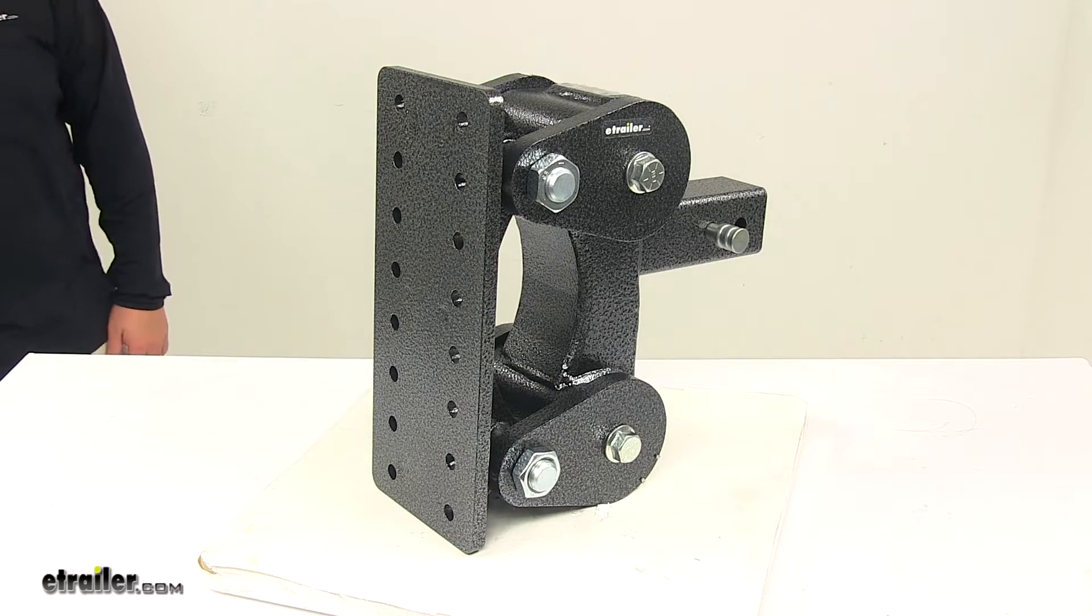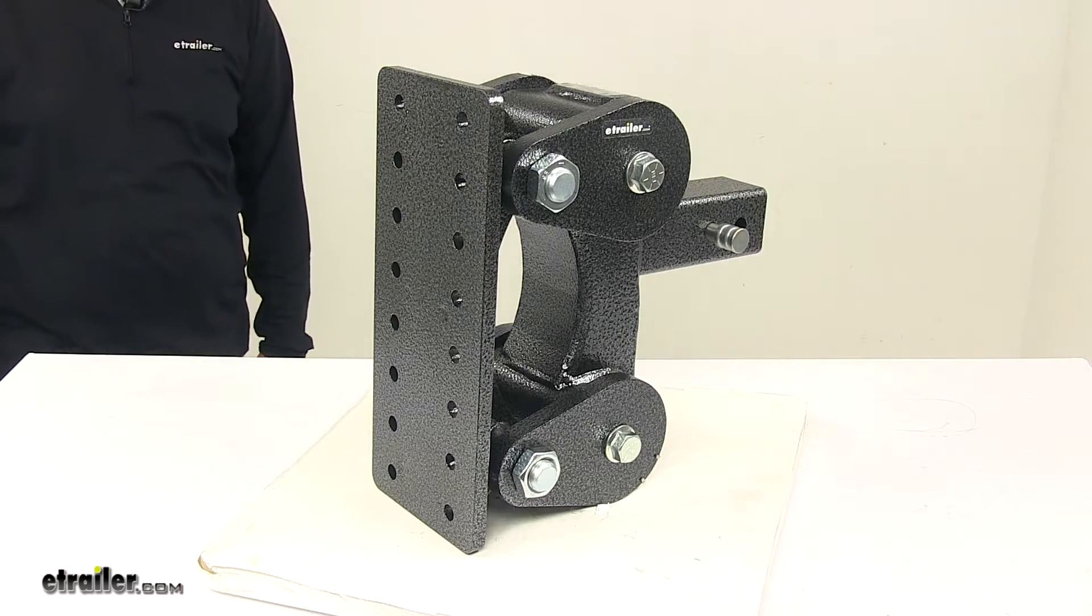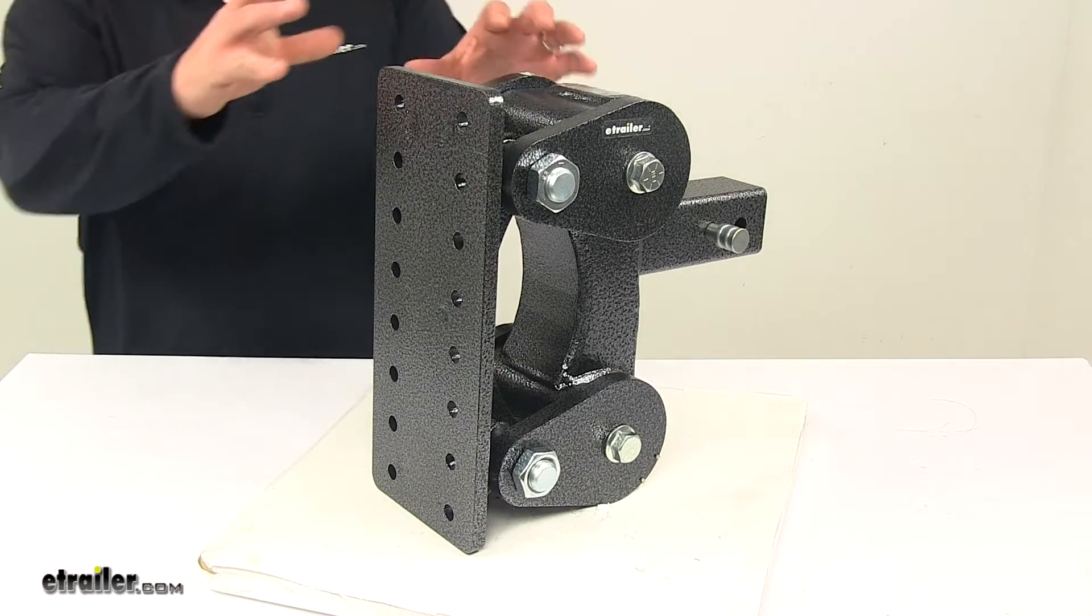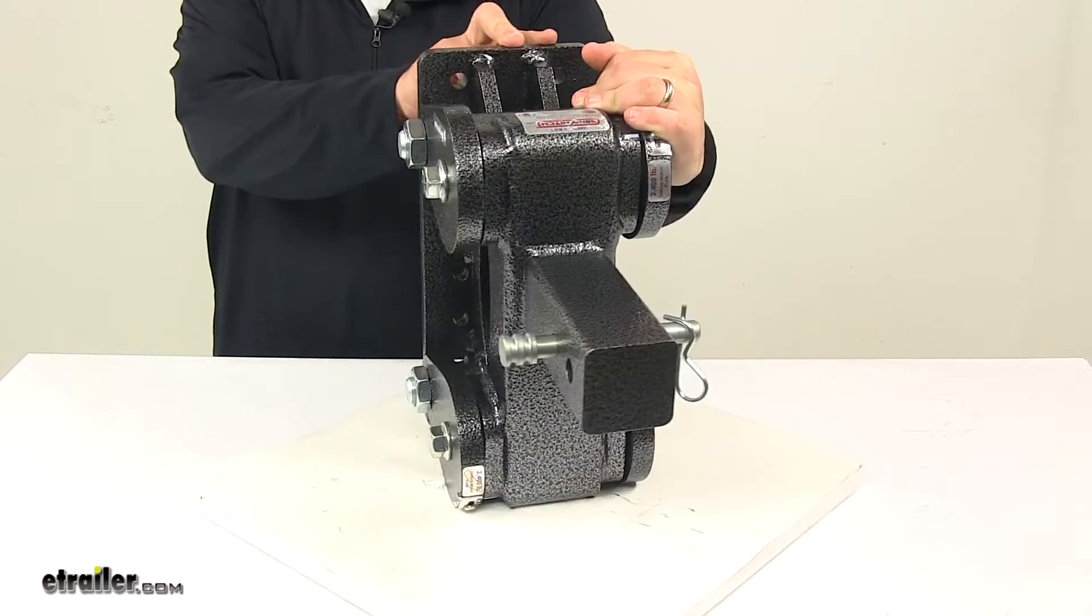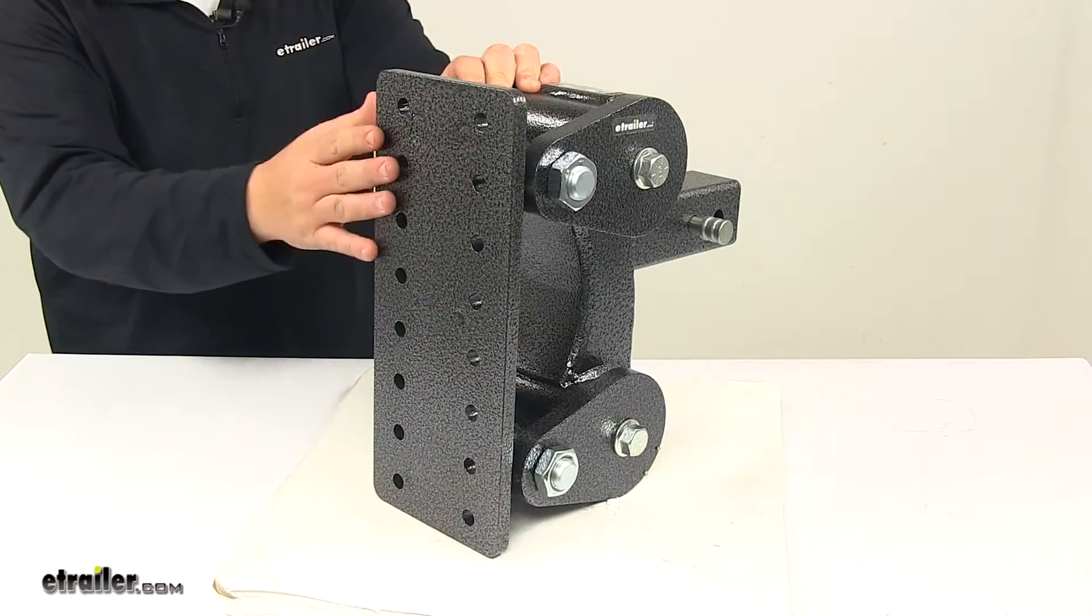Today we're taking a look at the Gen Y Torsion Pintle Hook Mounting Plate for 2½ inch hitches. Now this system is kind of like an all-in-one deal. The only thing that you need to add on to it is a Pintle Hook Mount.